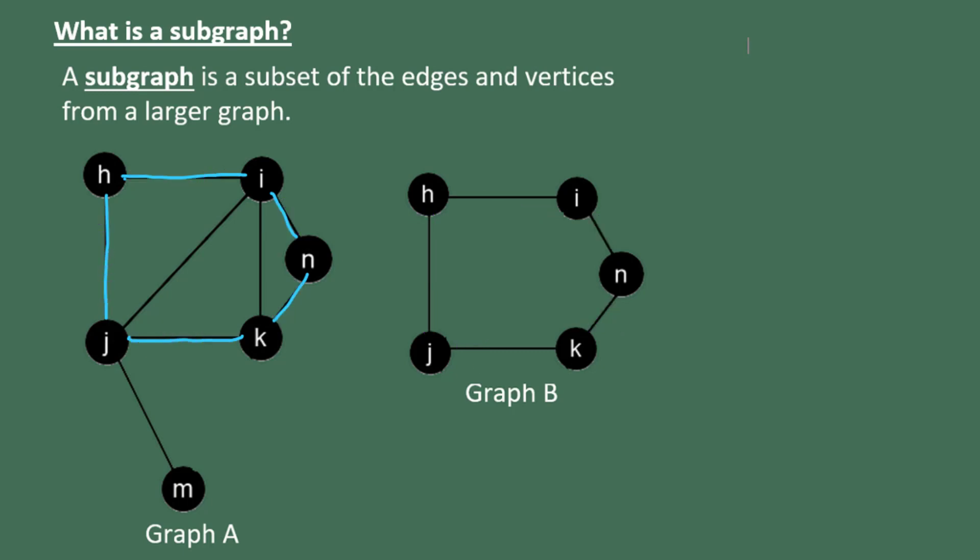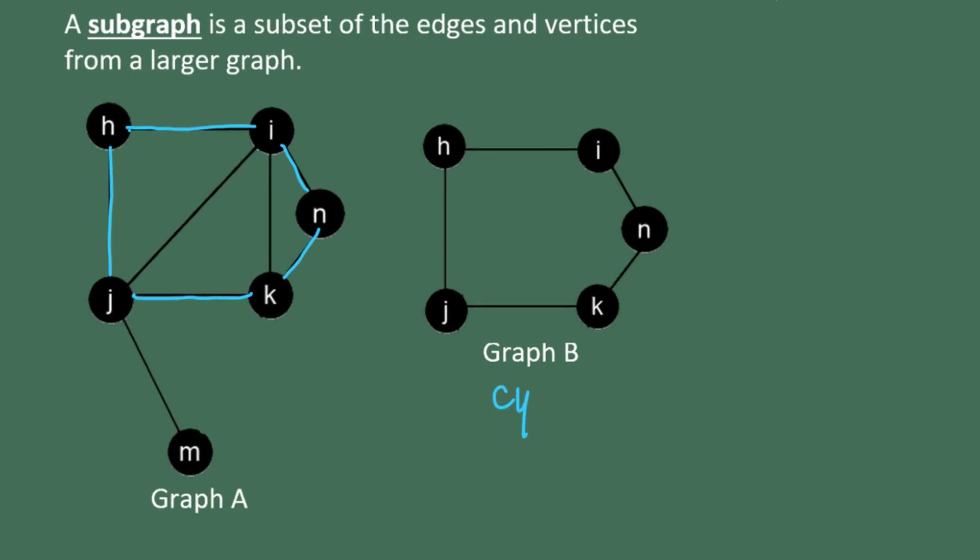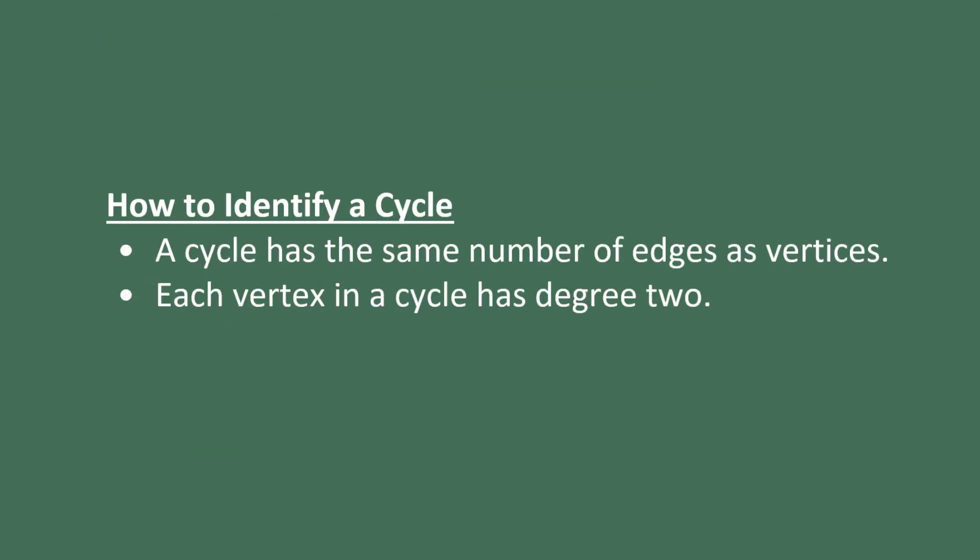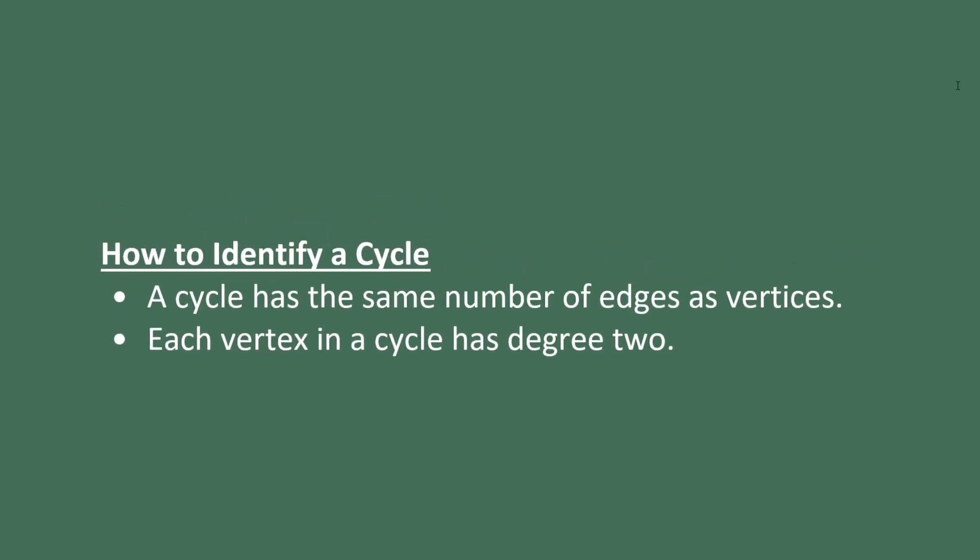In this case, B happens to be cyclic. It's a cycle. So we call graph B a cyclic subgraph of graph A. A cycle has to have the same number of edges as vertices and each vertex in the cycle has to have degree two.